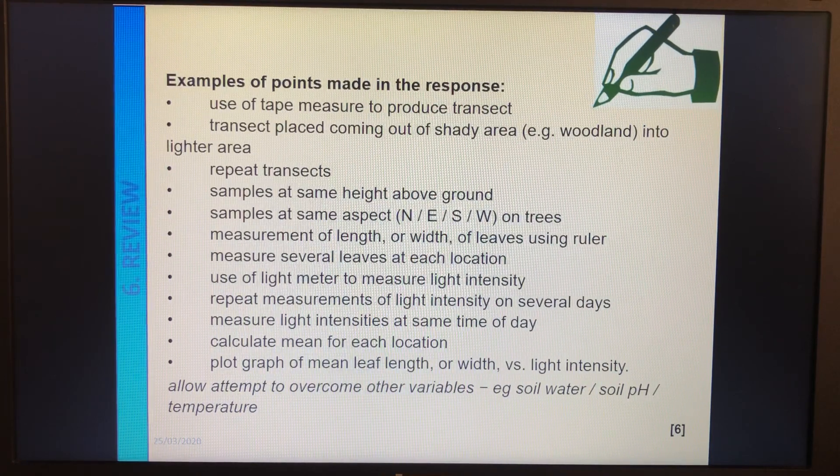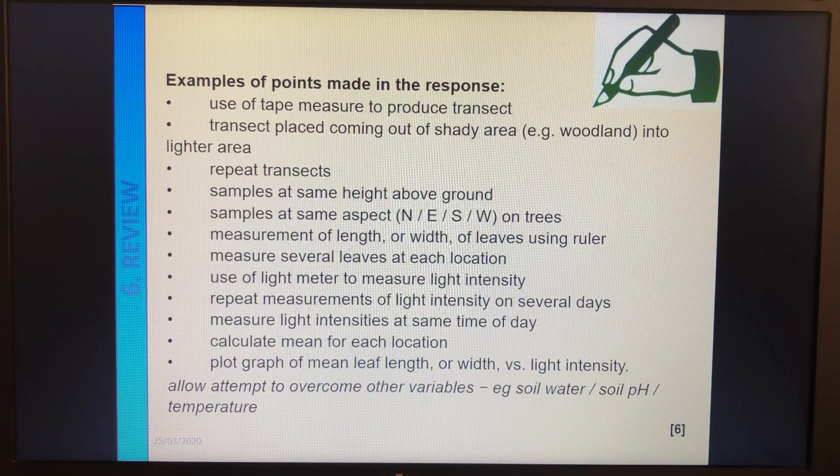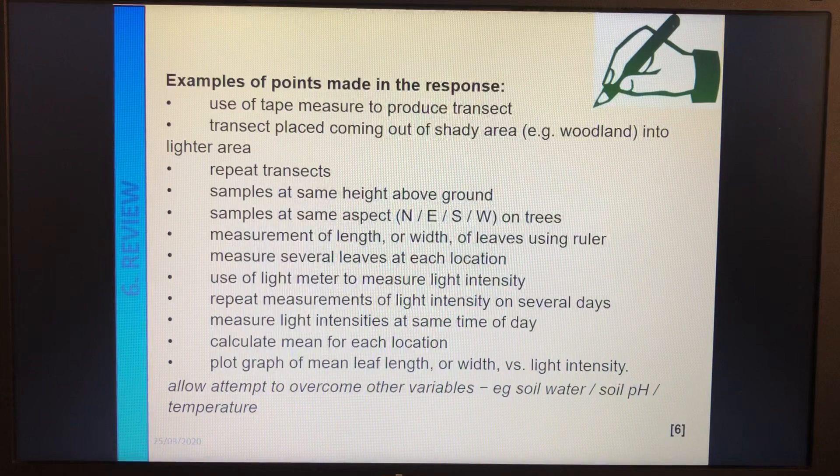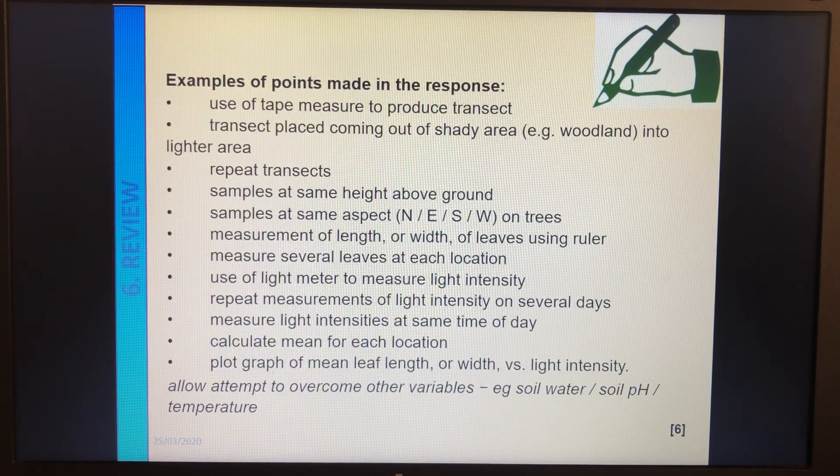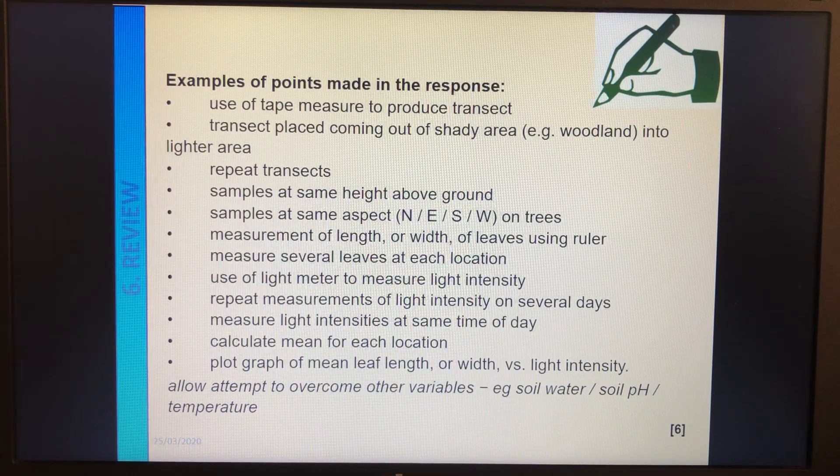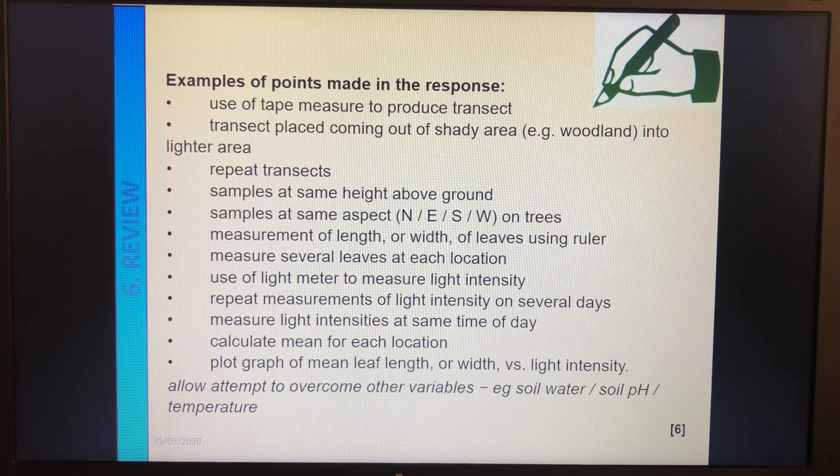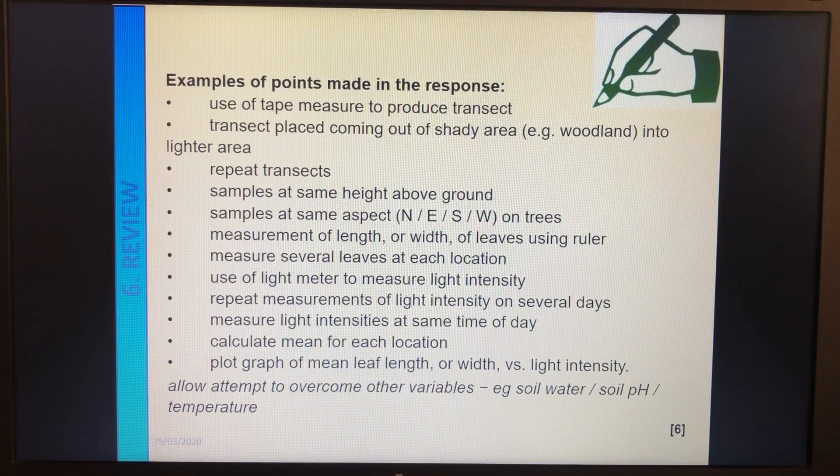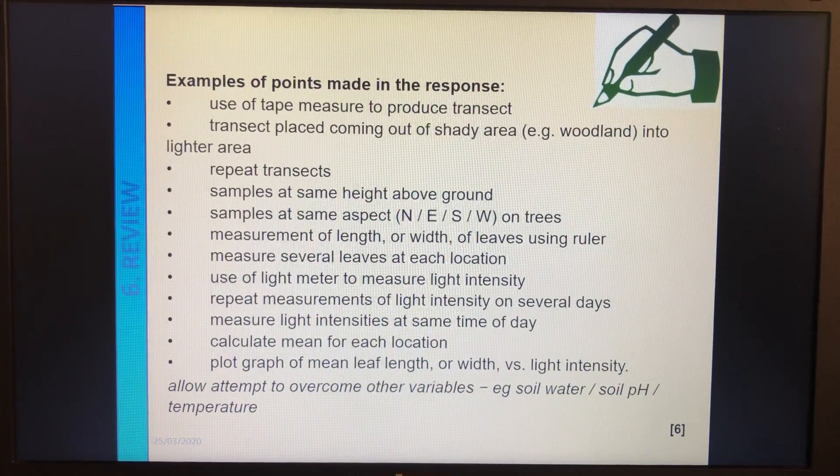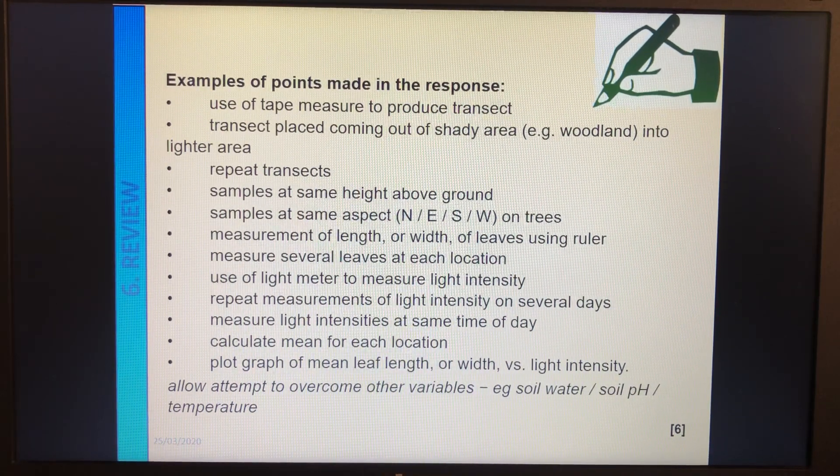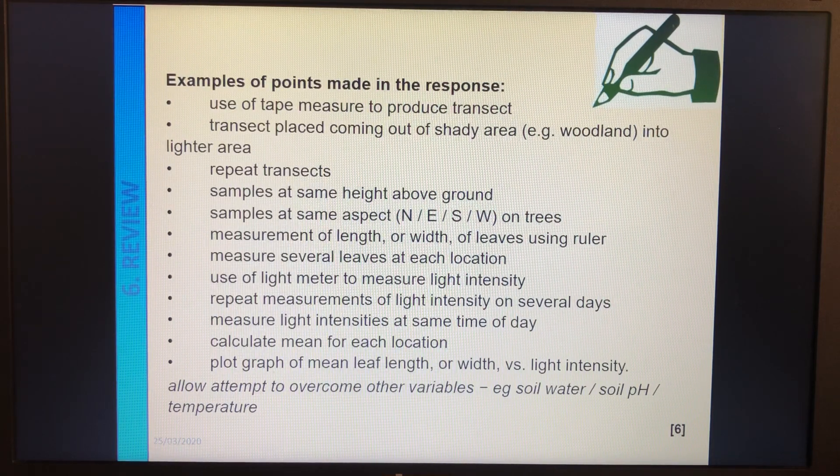How you measure it? The length, the width of the leaves using the ruler, or like I said, you could trace it on squared paper and work out the area. Measure several leaves in each location. That's a good idea. So you've got one light intensity and you do several repeats there. Use a light meter to measure the light intensity and match that up with each of the different leaves that you collection of leaves you've got.